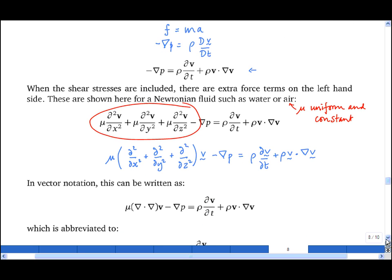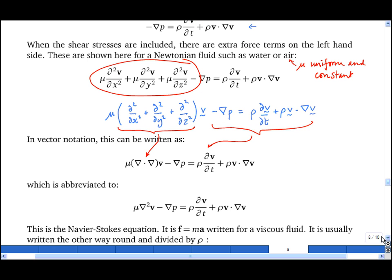In vector notation, this can be written very conveniently as mu del dot del V, with the additional terms unchanged. And del dot del is abbreviated simply to del squared.